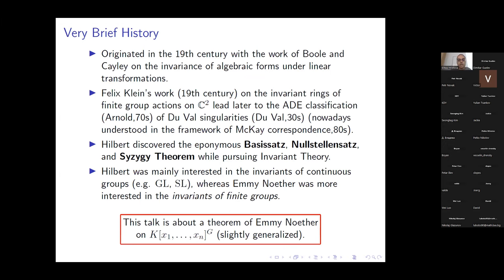A very brief history: invariant theory originated in the 19th century with the work of Boole and Cayley on the invariants of algebraic forms with respect to linear transformations. Parallel to this, Felix Klein was working on the invariant rings of finite group actions on C². Even though this is 19th century mathematics, it's very much still relevant today. Klein's work led later to Duval in the 1930s doing work on the classification of singularities obtained by quotients of finite groups, fitting into Arnold's ADE framework from the 1970s.